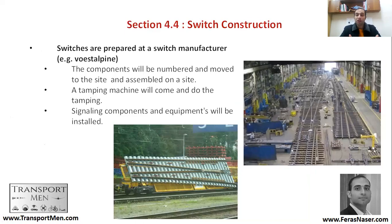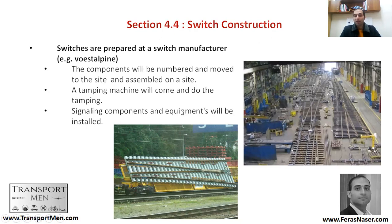Switches are constructed in manufacturing plants — they are laid out, numbered, assembled, and tested. Then they are disassembled, put on trucks or special trains, and taken to site. They are installed, then a tamping machine is brought to tamp the ballast underneath them. Signaling components and equipment are installed after that, giving you a ready switch. The process: manufacturing, site installation, tamping, and signaling components. Vossloh is one of the most famous manufacturers, with a plant in Çankırı, Turkey.